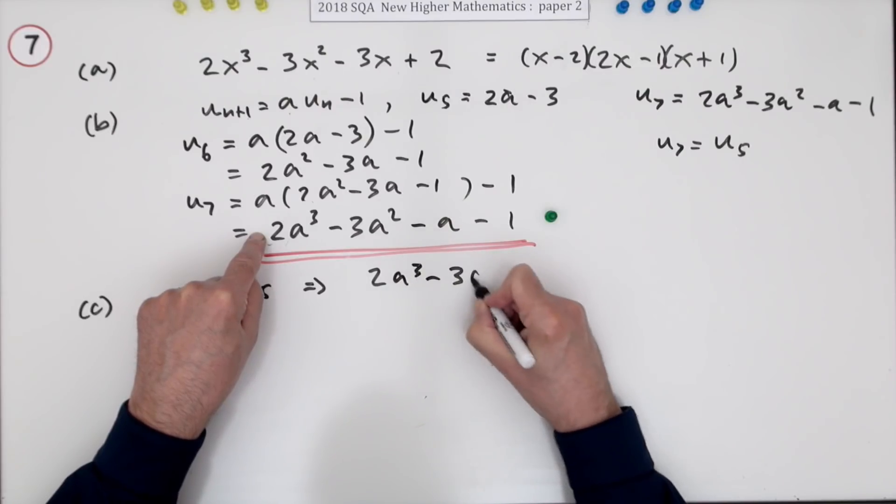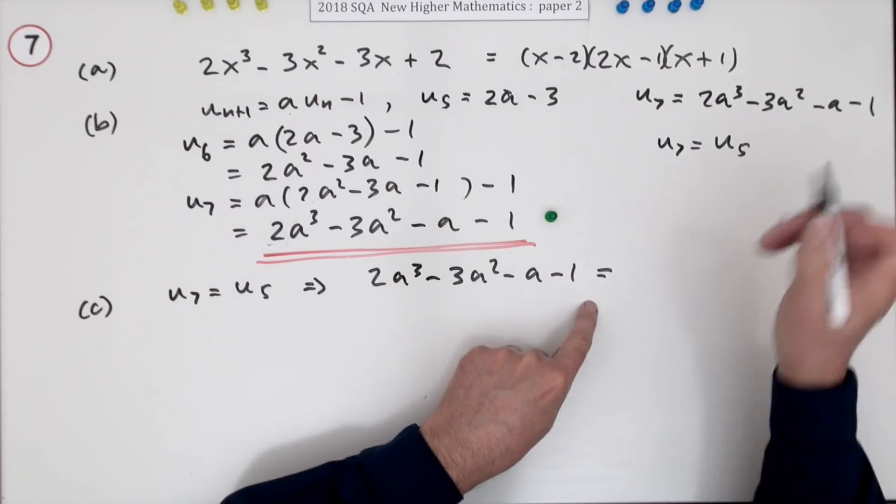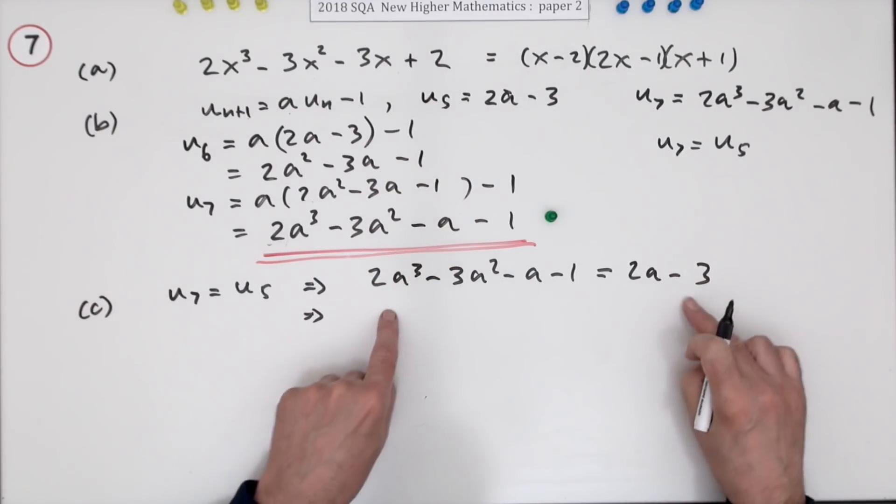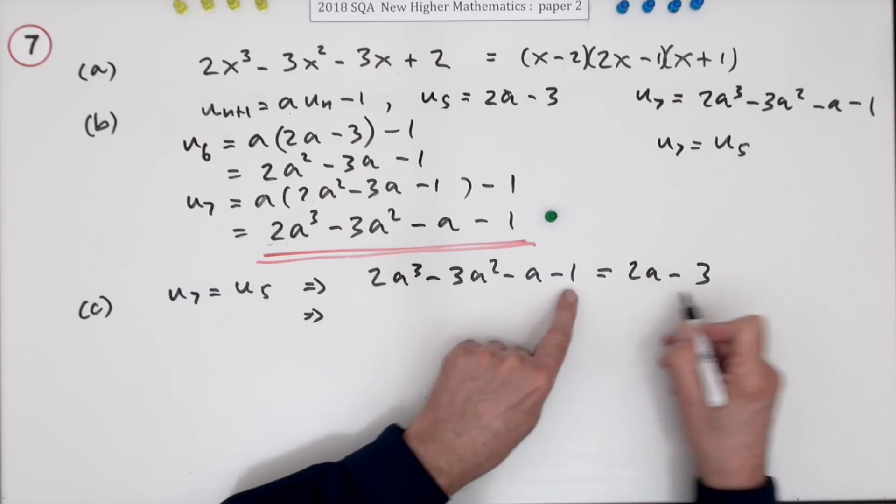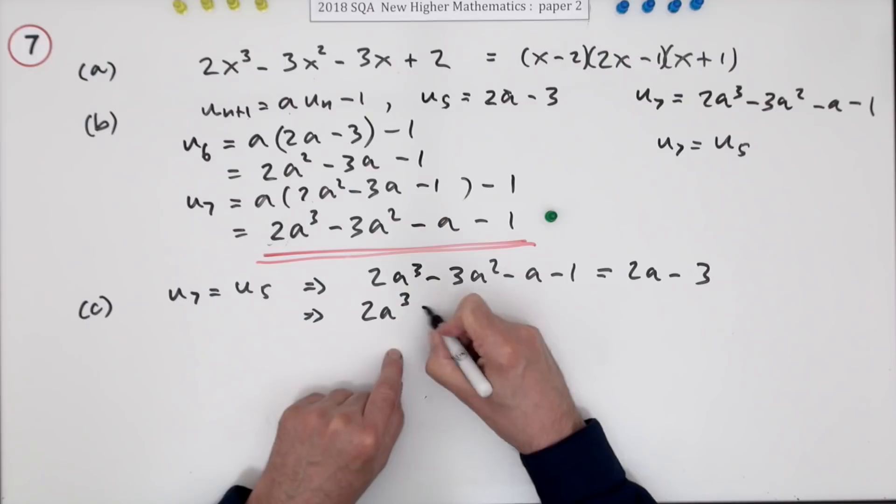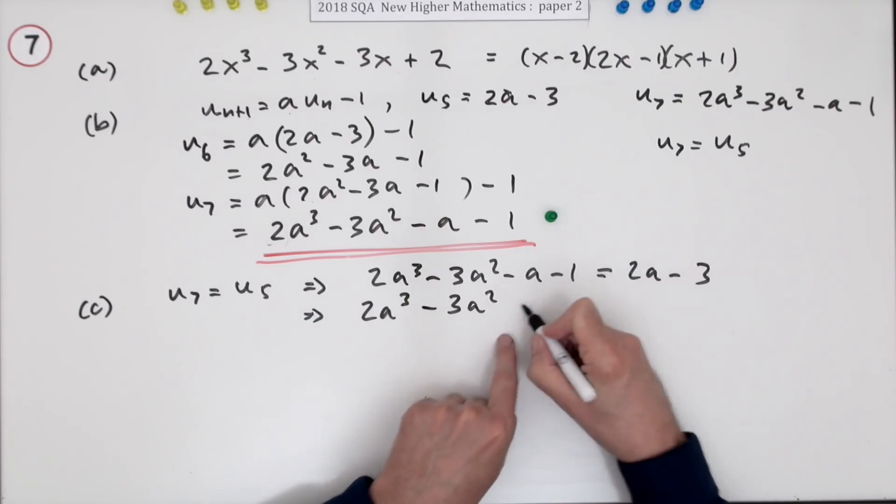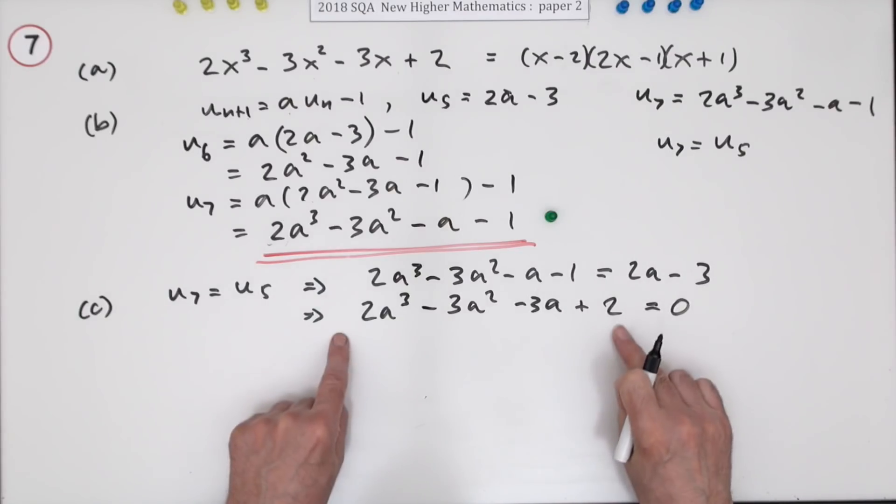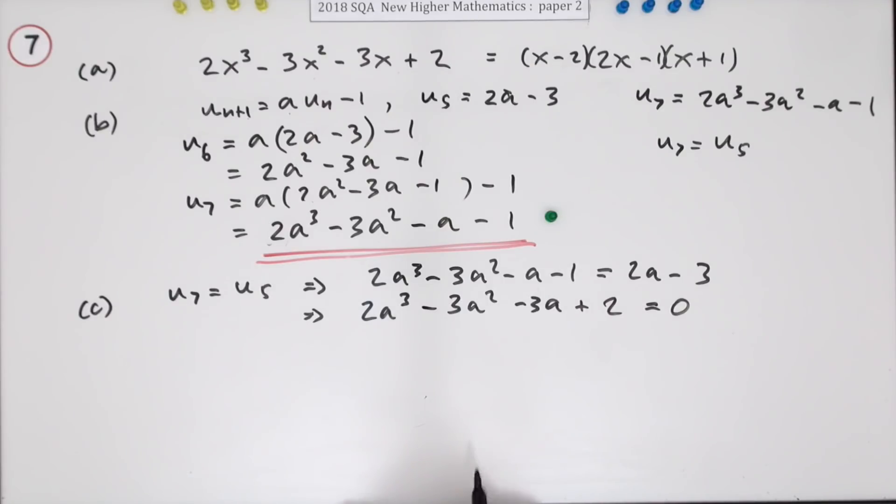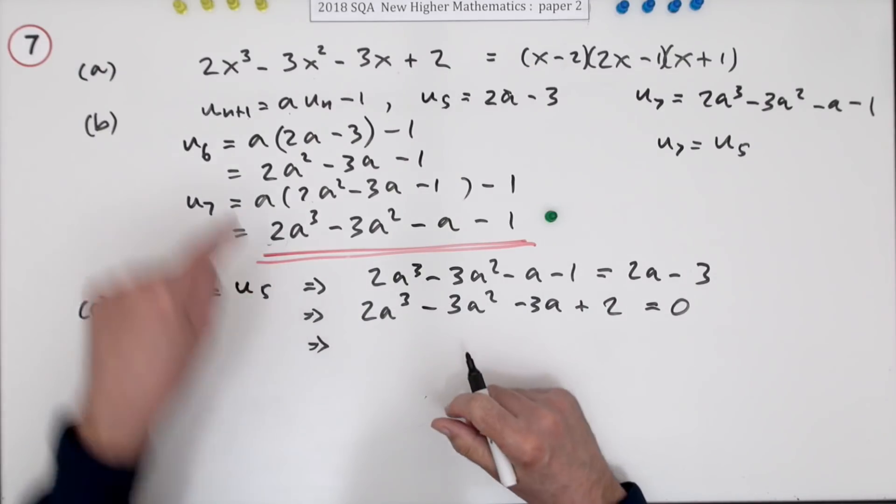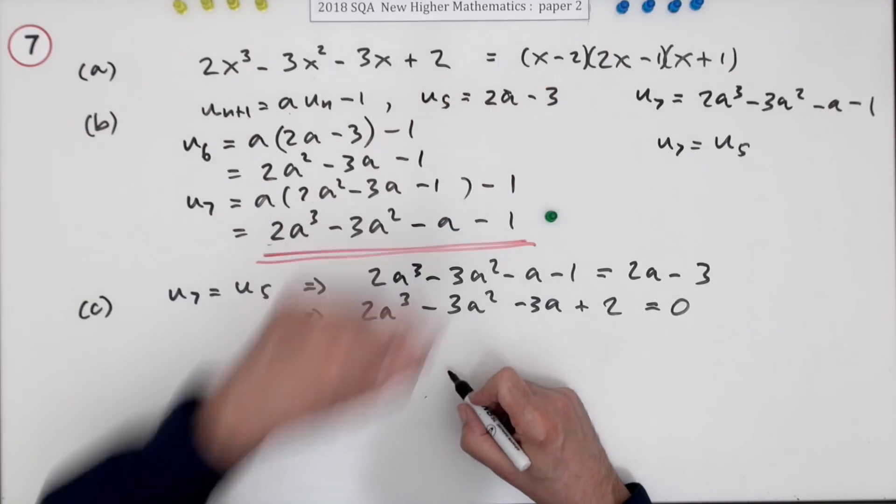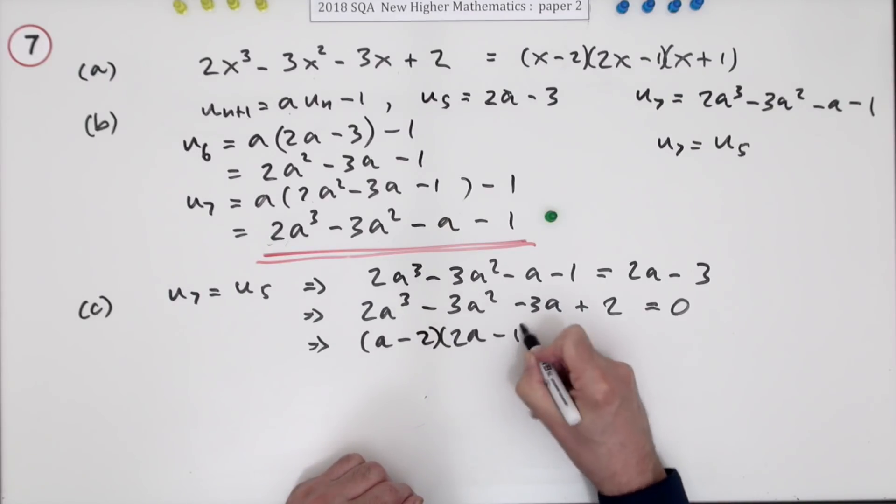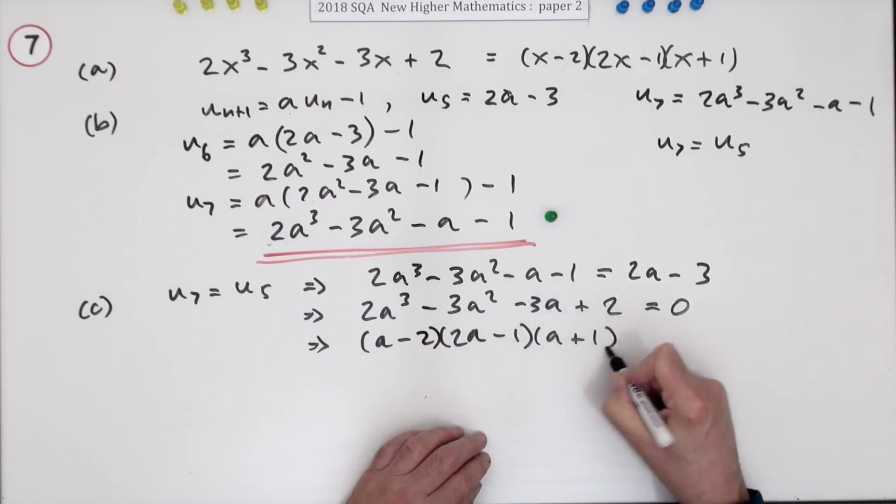u7 is equal to u5 it said. Well that means u7 just copying it down is equal to u5. Make an equation. And then no surprise when you bring that over it'll affect the a term and the constant term. You've got 2a cubed minus 3a squared minus 3a but plus 2 equals 0. And you've got the same expression that you had in part a. Because in order to solve this you need to factorize it. But you've already factorized it here so you know the answer. It's going to be but these are a's not x's. It's going to be a minus 2.